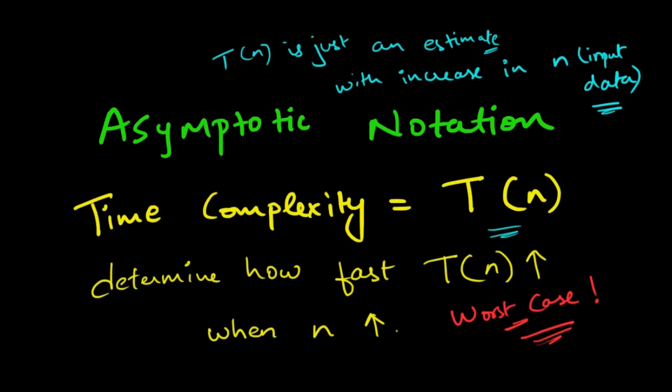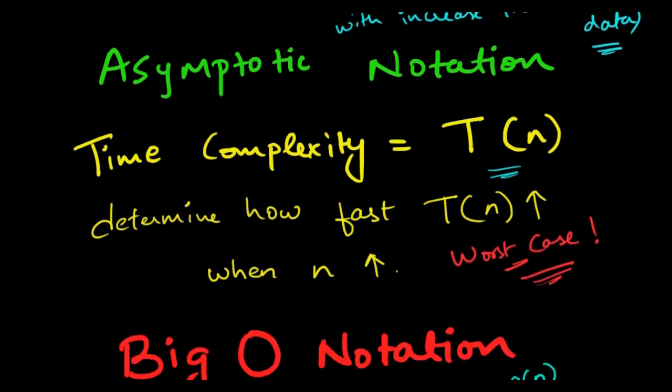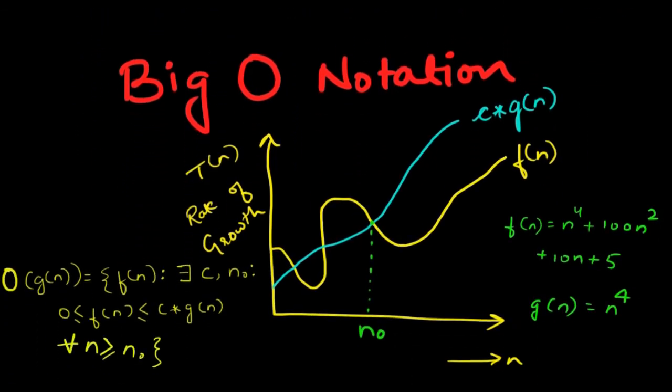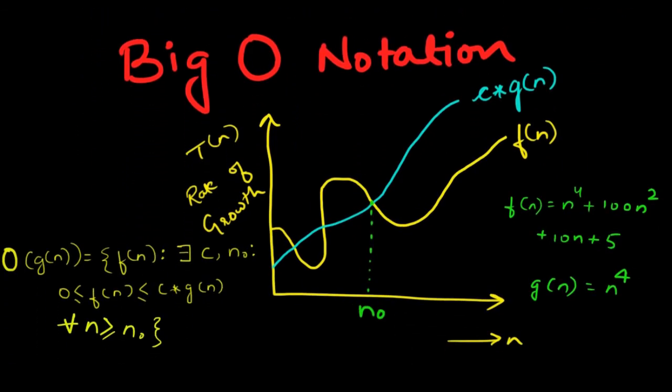Big O notation is the most common metric for calculating time complexity. Big O specifically describes the worst-case scenario and can be used to describe the execution time required by an algorithm. The O in Big O stands for the order of growth.